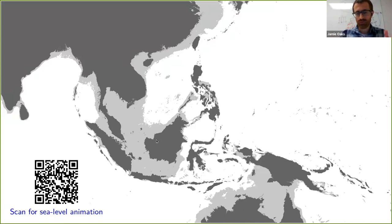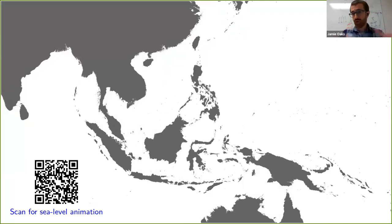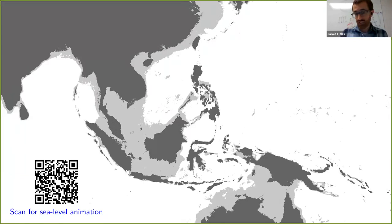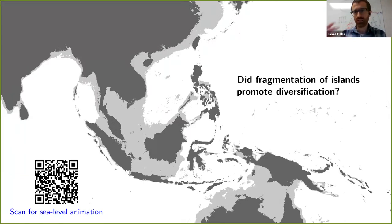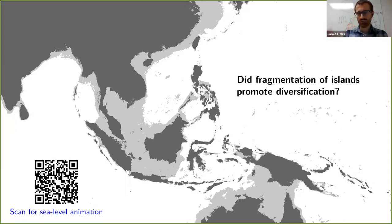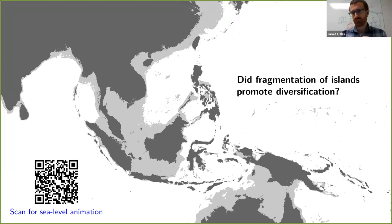This begs the question: did this repeated fragmentation of the landscape promote diversification? It's long been assumed in the biogeographic literature that these interglacial fragmentations drove a species pump — that speciation was happening every time there was an interglacial period. But we want to actually test that. If correct, when we look at divergence times of taxa across this region, we should see divergence times that are clustered and correspond with the interglacial periods when the islands were fragmented.